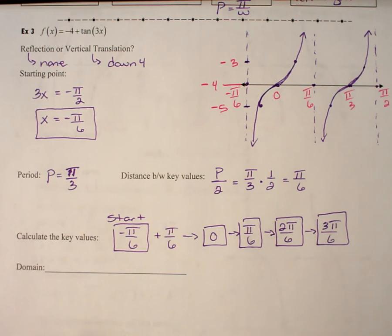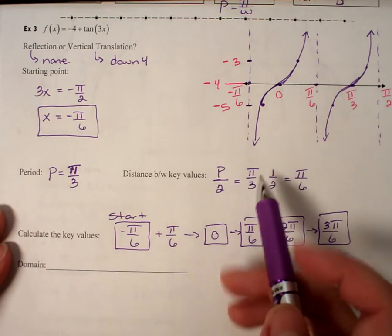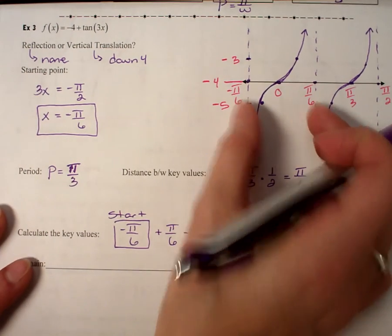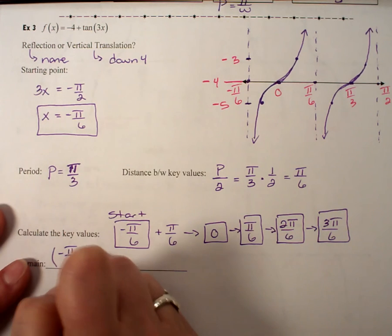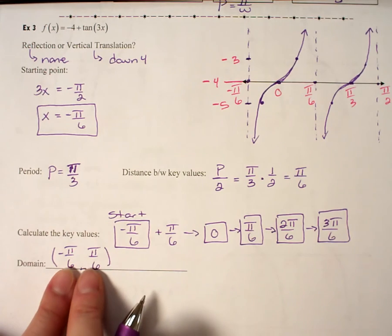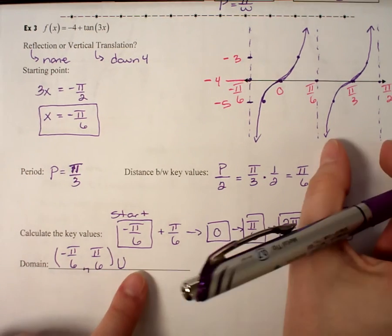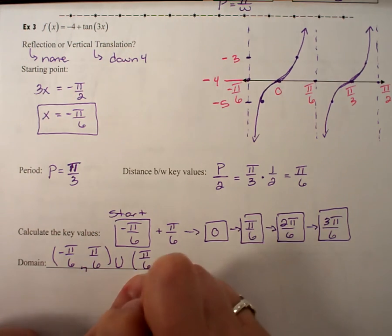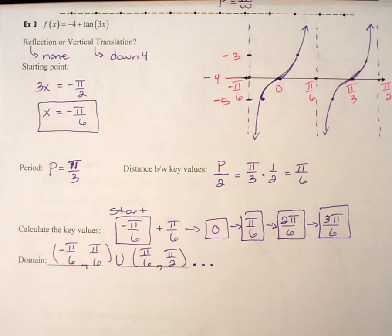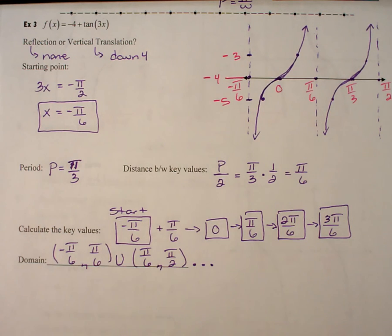The last thing is writing my domain, and I want to indicate that this is a cyclical domain. It's not continuous, but it is cyclical. So I'm going to use the values at the asymptotes, and I'm going to say negative π/6 to positive π/6. That indicates one period. That's going to join with the next period that I see. And I'm going to have π/6 to π/2. And then I want to continue this and put the ellipses in there to continue, indicate that this cycle is continuing over and over again. And that's all that I need to do for graphing my tangent.